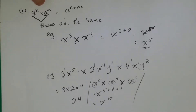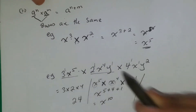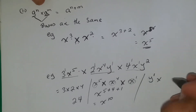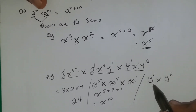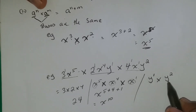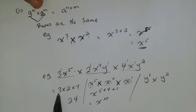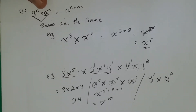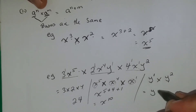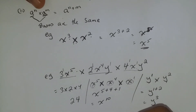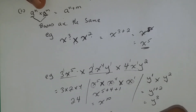Now for the y terms: the first term has no y, so we ignore it. The second term has y to the first, and the last term has y to the second. Since the bases are both y, we apply the law of indices: y to the one plus two equals y to the third. So the final answer for Example 2 is 24x to the tenth, y to the third.